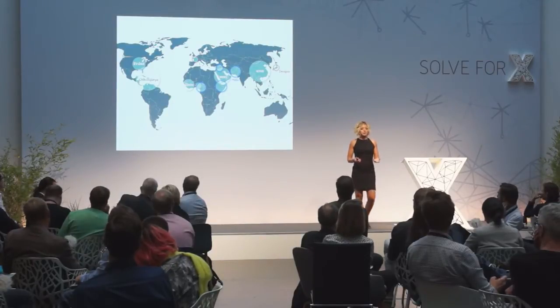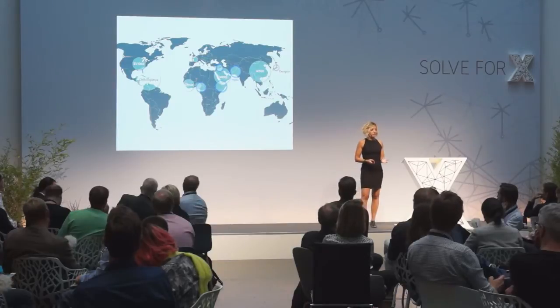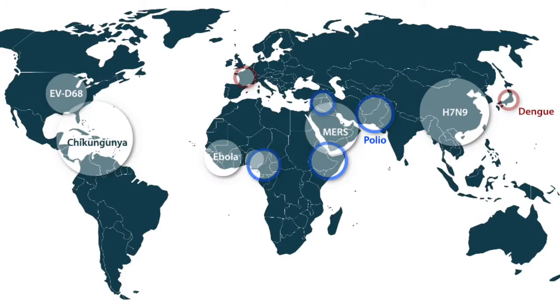We have newly emerging diseases that we didn't know before — for example, the MERS epidemic in the Middle East that recently led to an outbreak in South Korea. We have newly emerging influenza epidemics in Southeast Asia. We also have re-emerging diseases in areas we haven't seen them before, never in history — for example, dengue in Europe, chikungunya in the Caribbean.